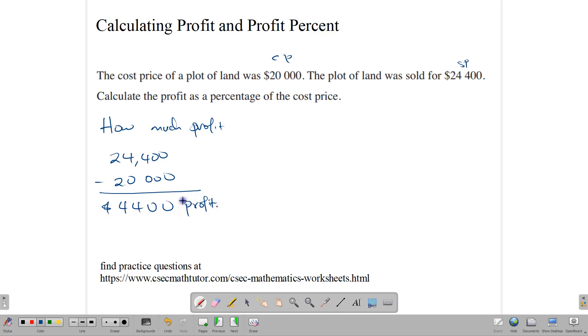Now to find the profit percent, we're going to take this profit and write it as a percentage of the cost price. So we write it over $20,000 and not $24,000 because we are comparing our profit to our cost price, meaning we are comparing it to how much we paid for the thing.